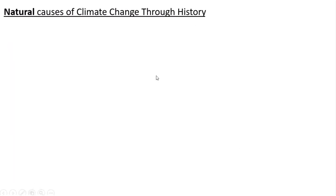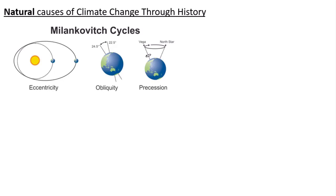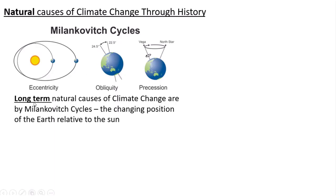We're interested firstly in the natural causes of climate change, because climate has changed whether we were here or not. One concept people struggle with is Milankovitch cycles — a chap called Milankovitch came up with cycles that help explain long-term natural causes of climate change. The main one by a long way is eccentricity, which means the Earth's orbit changes. If you get an exam question, you could say the Earth's orbit changes from a more circular one to an elliptical one and still get the marks.